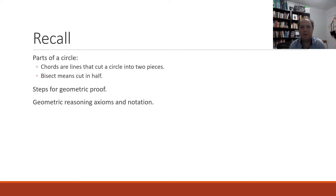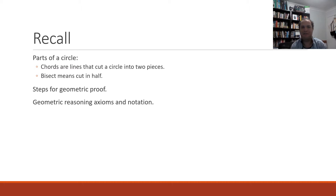The things you have to recall: first of all, chords are lines that cut our circle into two pieces but not through the center, and bisect means cut in half. Bisect could mean cutting our line or chord in half, but we can also bisect angles and cut angles in half. You'll also have to remember how to solve geometric proofs and the steps and the table we use for that, and also we have to be able to use geometric reasoning, axioms, and the appropriate notation.